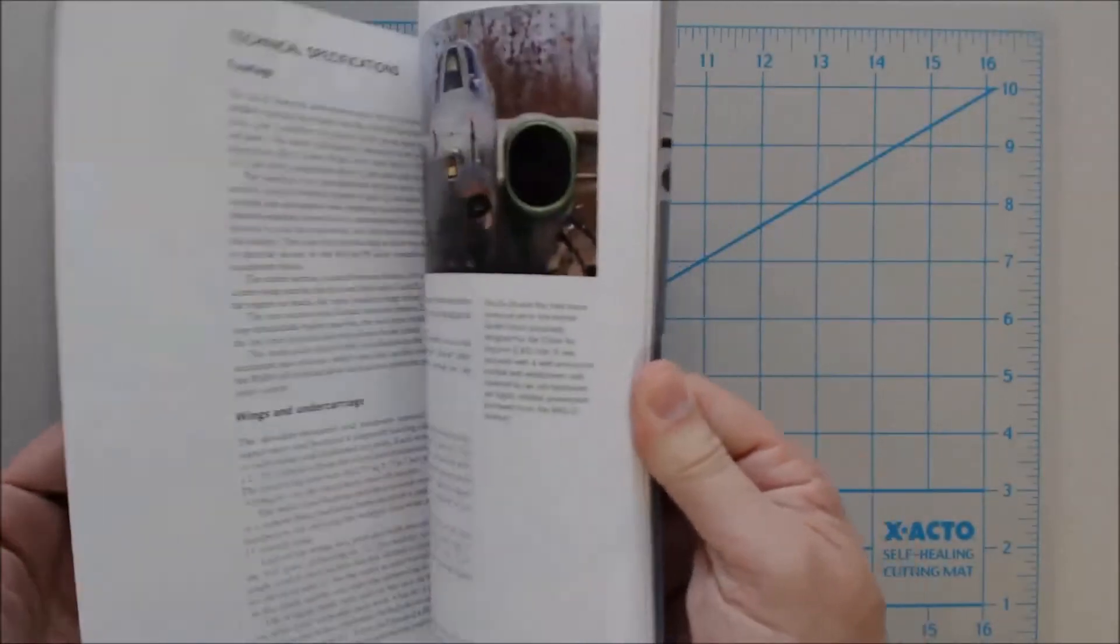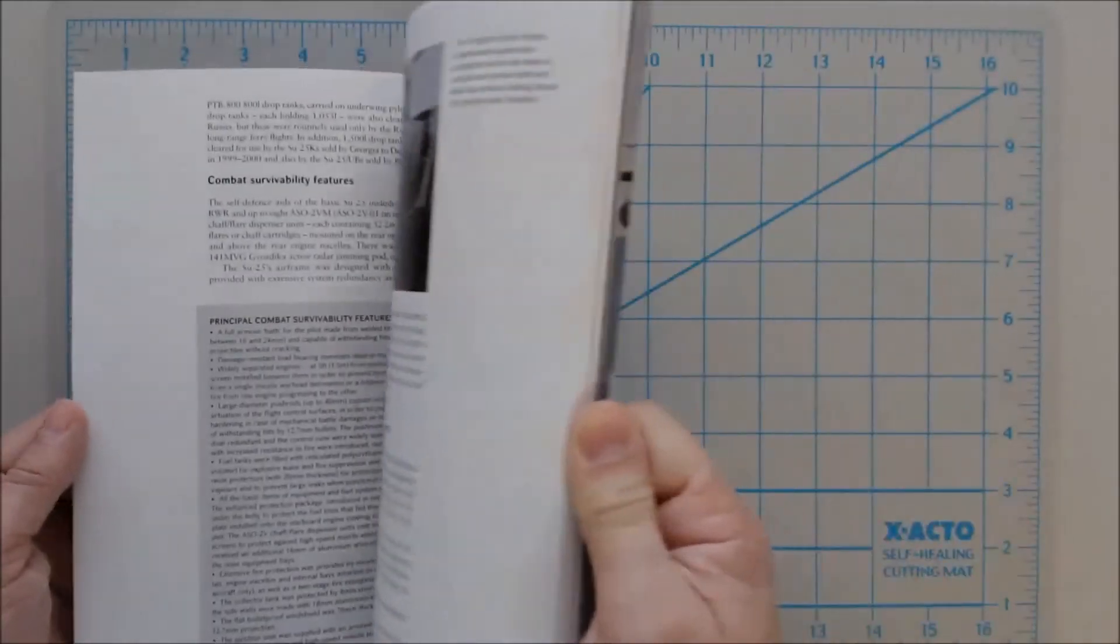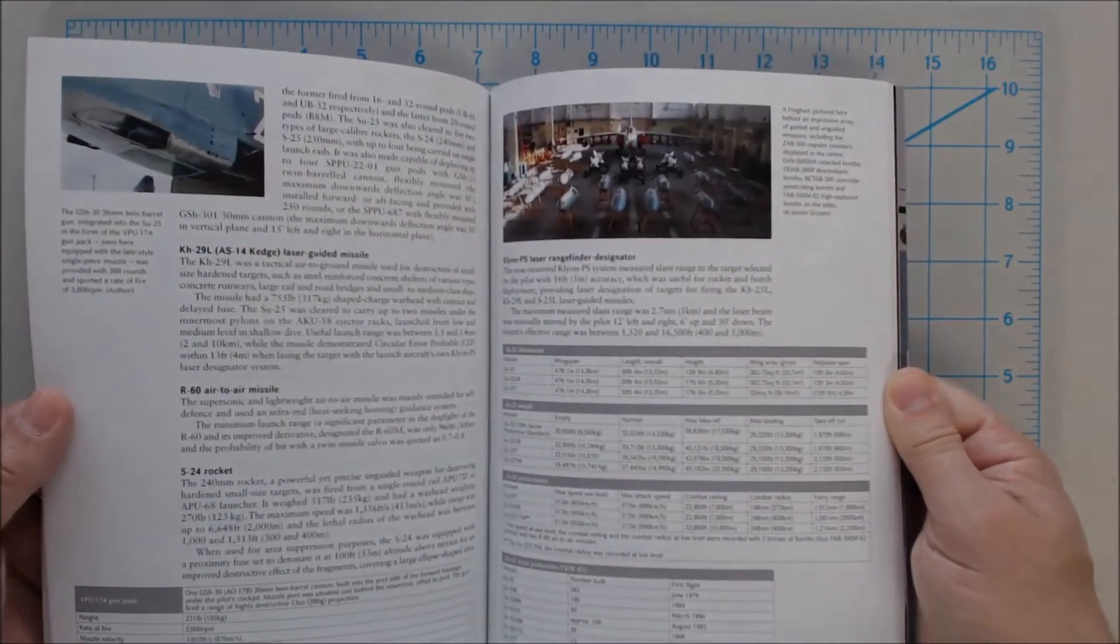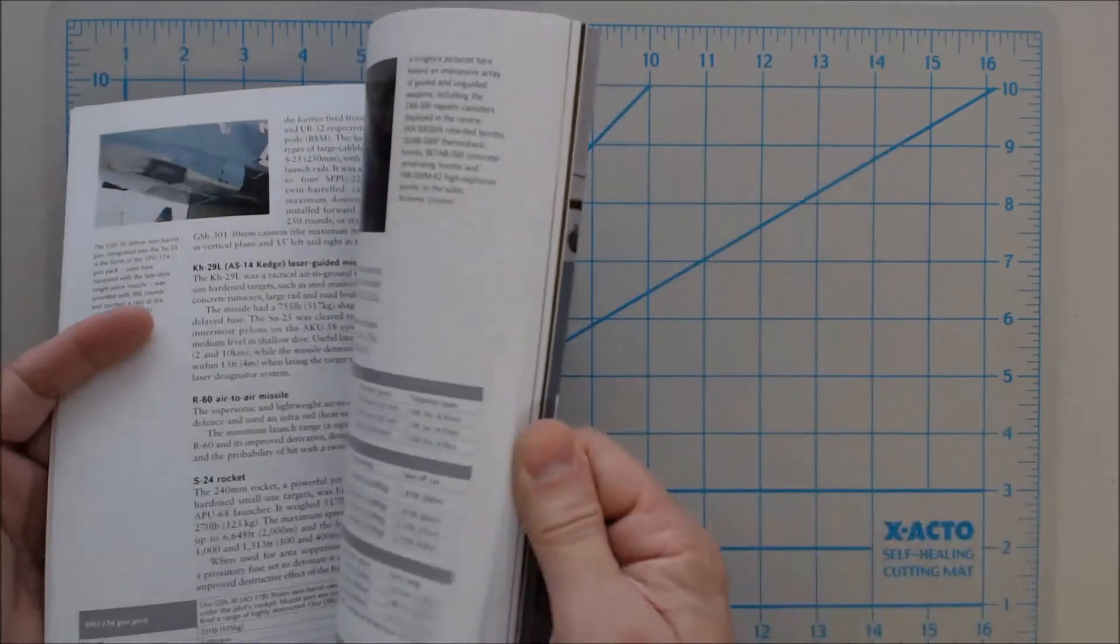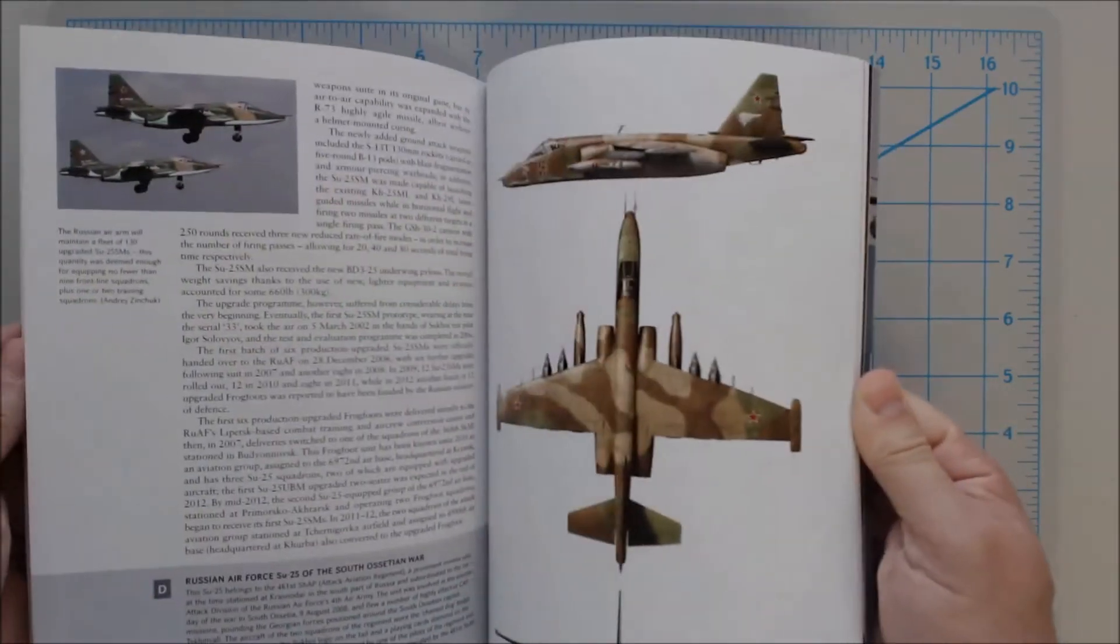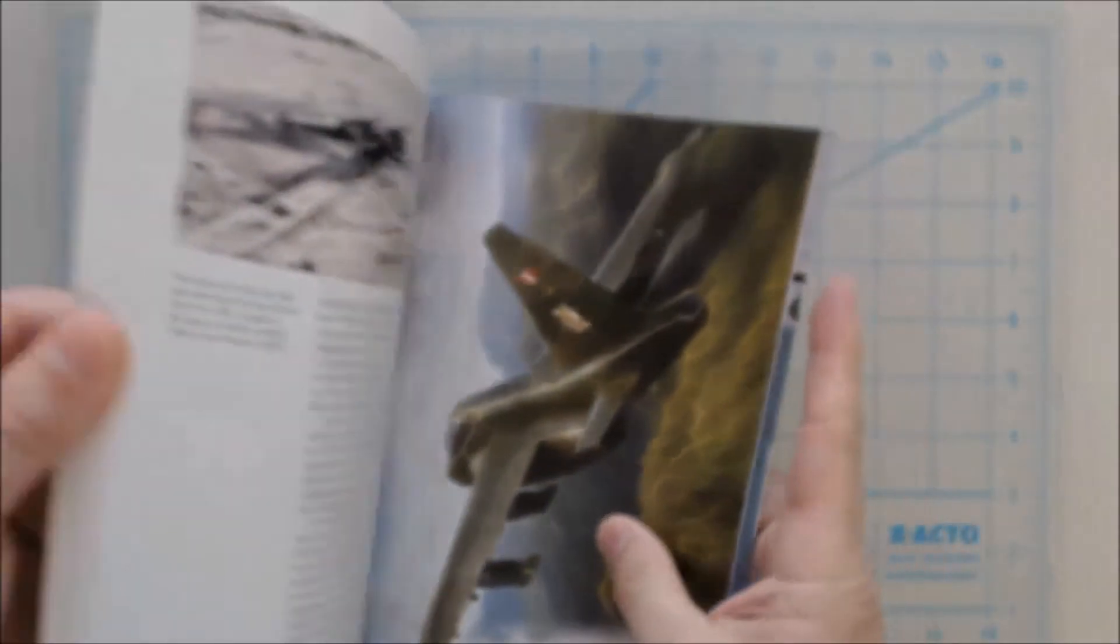And, moving ahead, we've got, again, more color photos, engine, exteriors, weapons, packs, graphs here of dimensions of various things, the plane itself, performance variables, more color plates, so a nice illustration there of a plane in action.